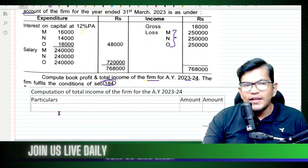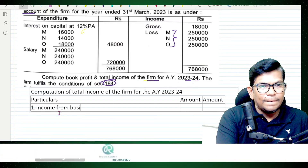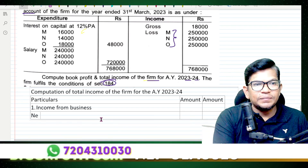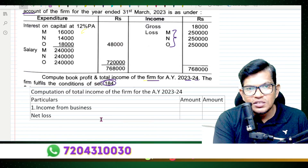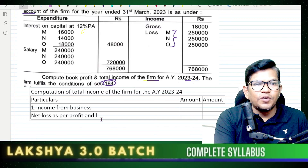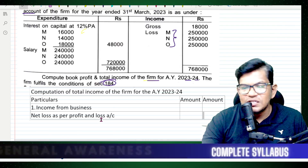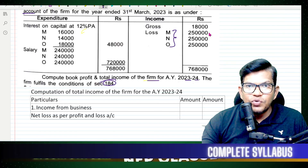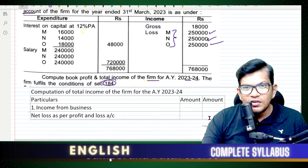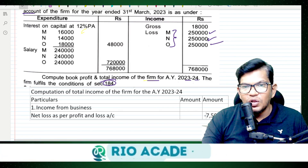You have income from business, but there is a net loss. Net loss from the business as per the profit and loss account — that is 25, 25, 25, which totals 75, so 7,00,000. The loss is 7,00,000.